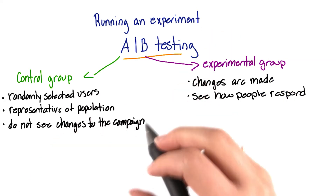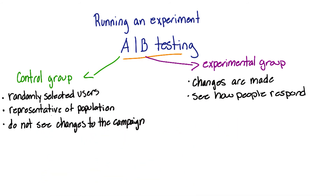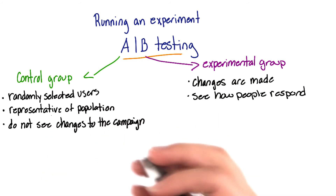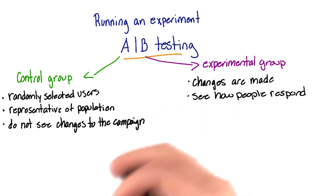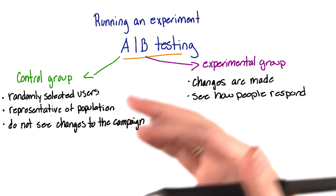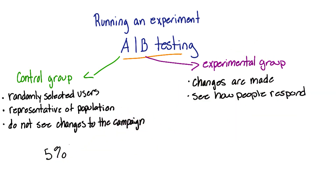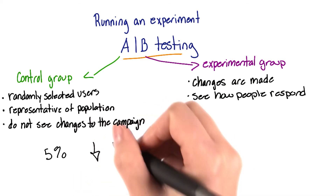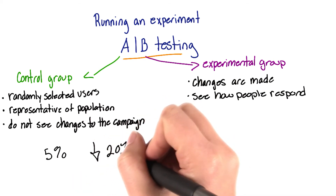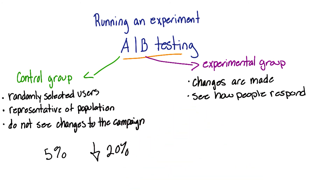Your control group doesn't need to be huge. The key is that it's representative of the target population. If you have a really large population, like thousands and thousands of people, you might only need about 5% of that population to be in your control group. However, if it's a smaller population, you may need closer to 20% to be in your control group.